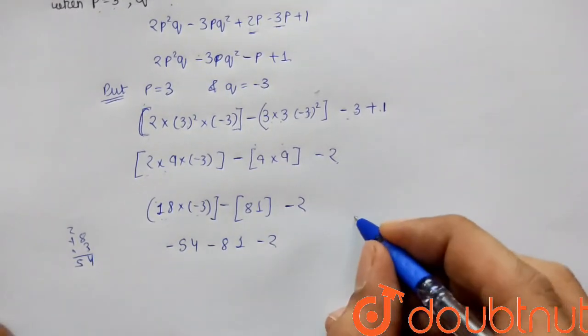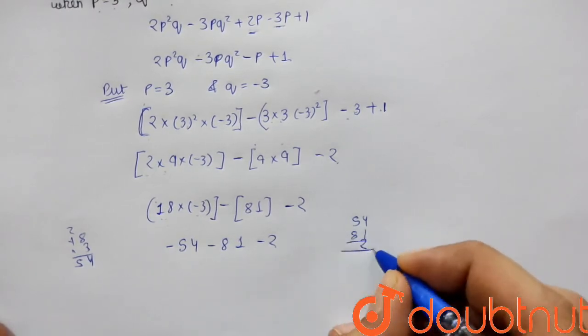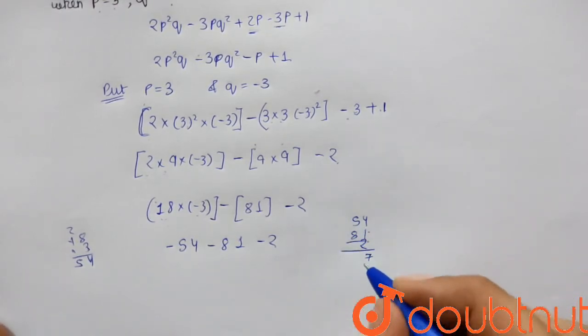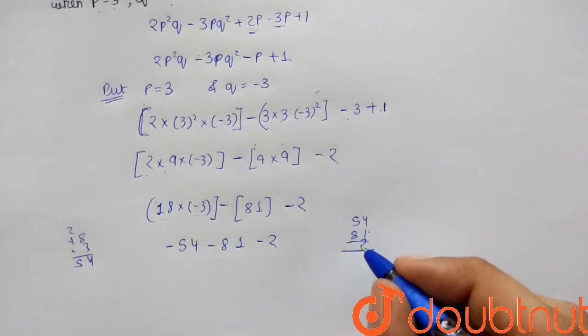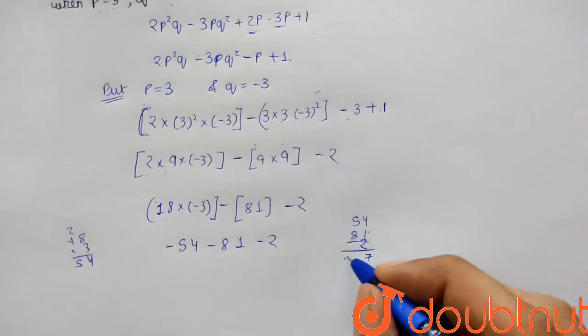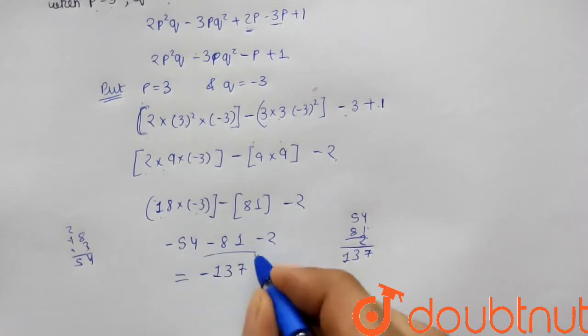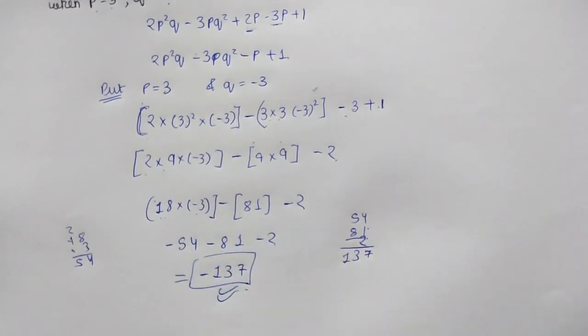So we have -54 - 81 - 2. The required answer will be: 54 + 81 + 2. 54 + 81 is 135, plus 2 is 137. So this will be -137.